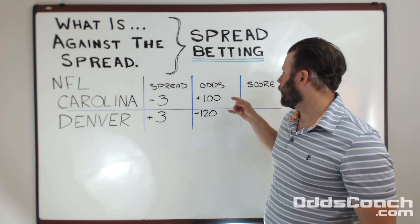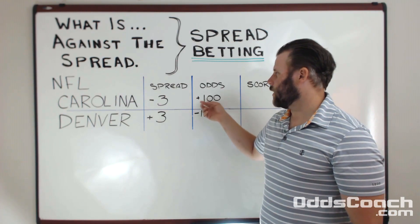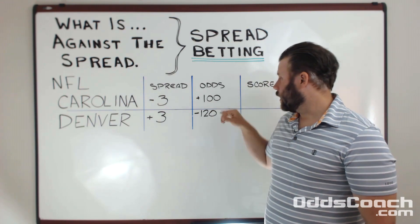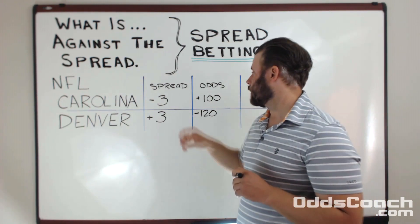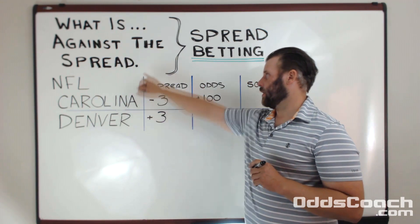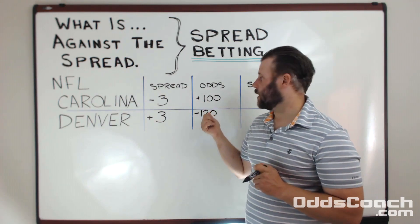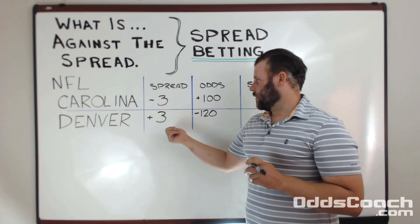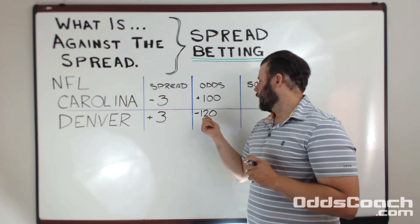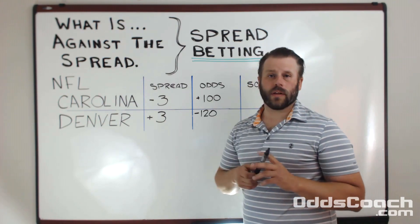Something to pay close attention to in spread betting is that sometimes the odds will move. Most typically you'll see minus 110, minus 110 on either side of the bet. In this example we're seeing a plus 100, minus 120. So what that means is that if you bet Carolina against the spread and place a hundred dollar bet, you're going to win an additional one hundred dollars. But if you were to place a hundred dollar bet on Denver and they were to win with the points, you're only going to win $83.33 because of the way the odds are.